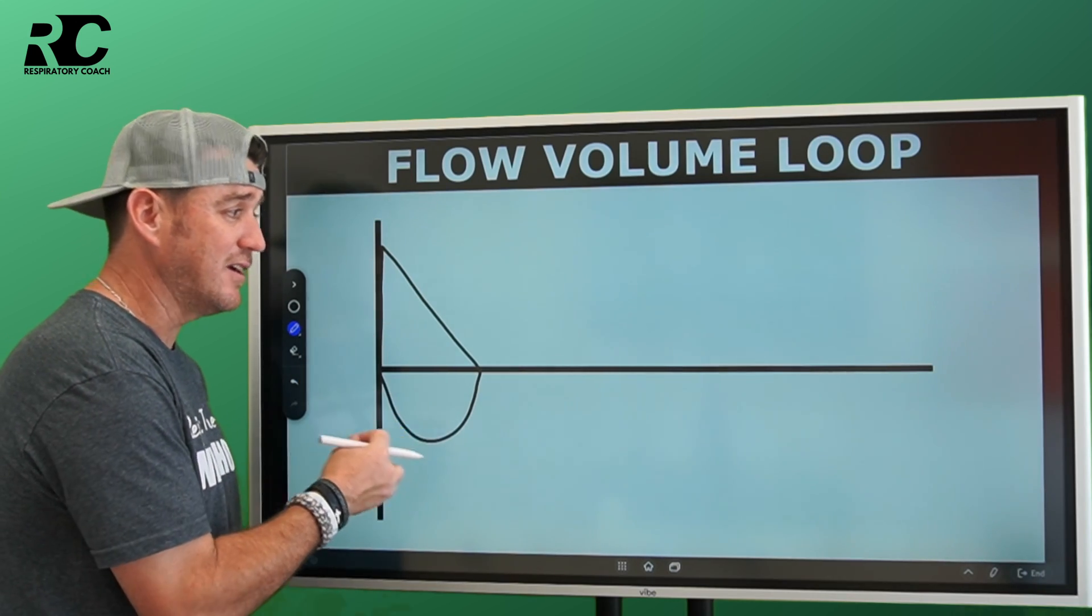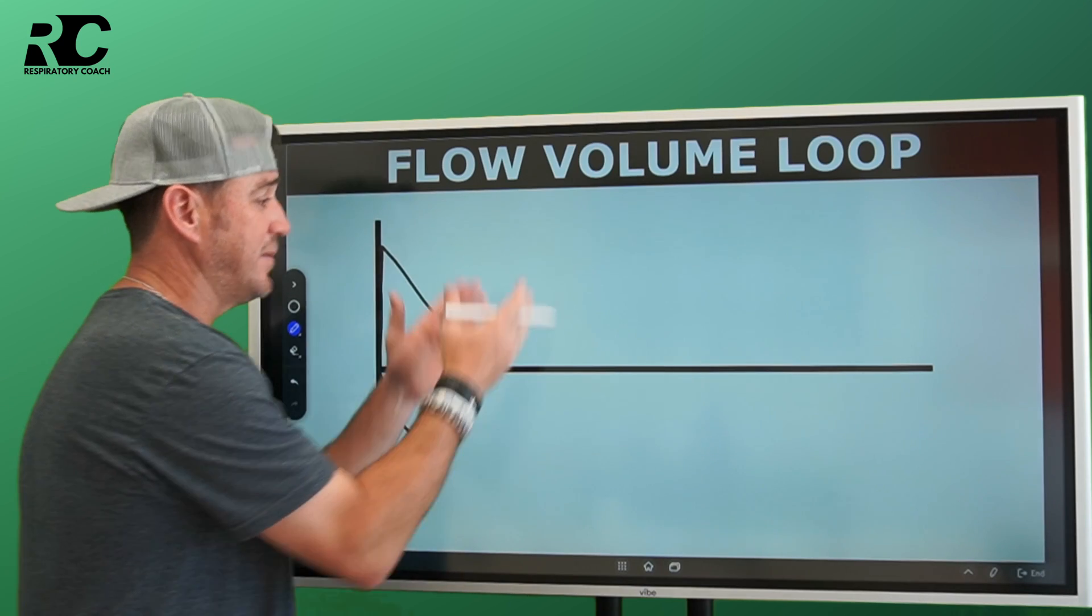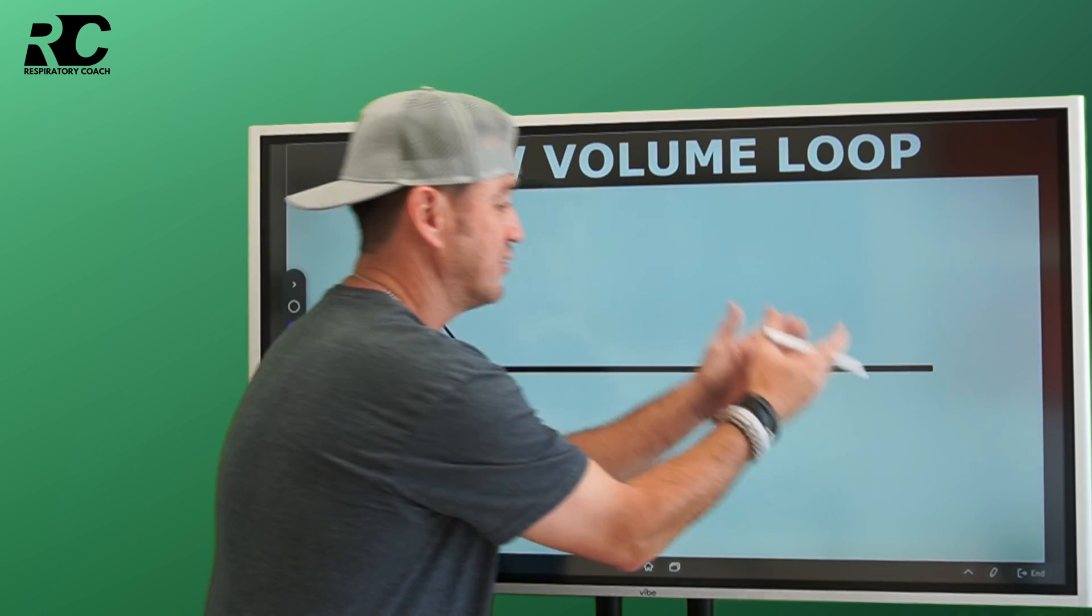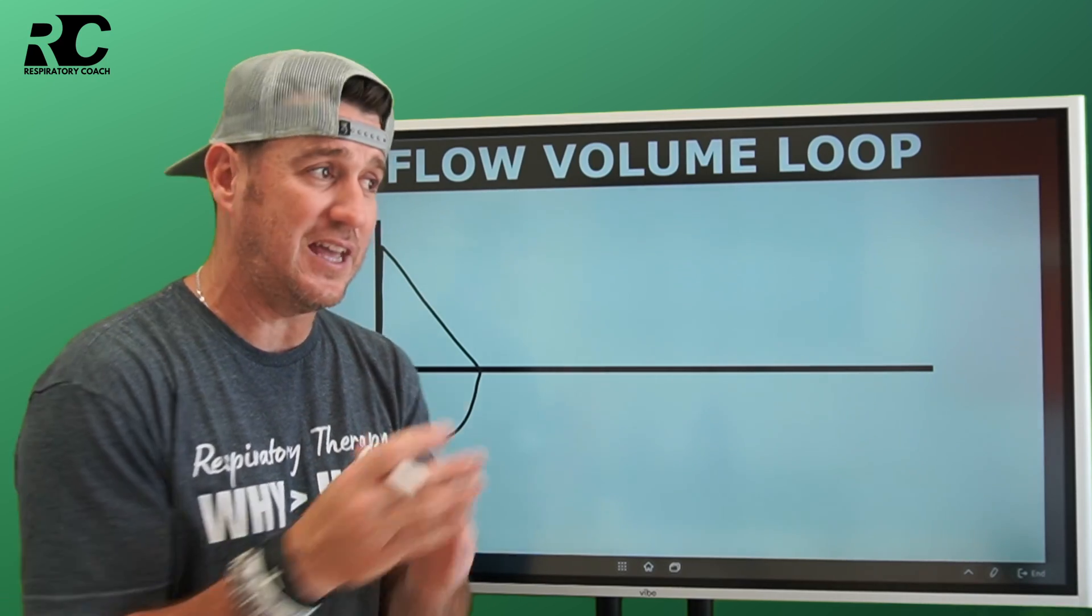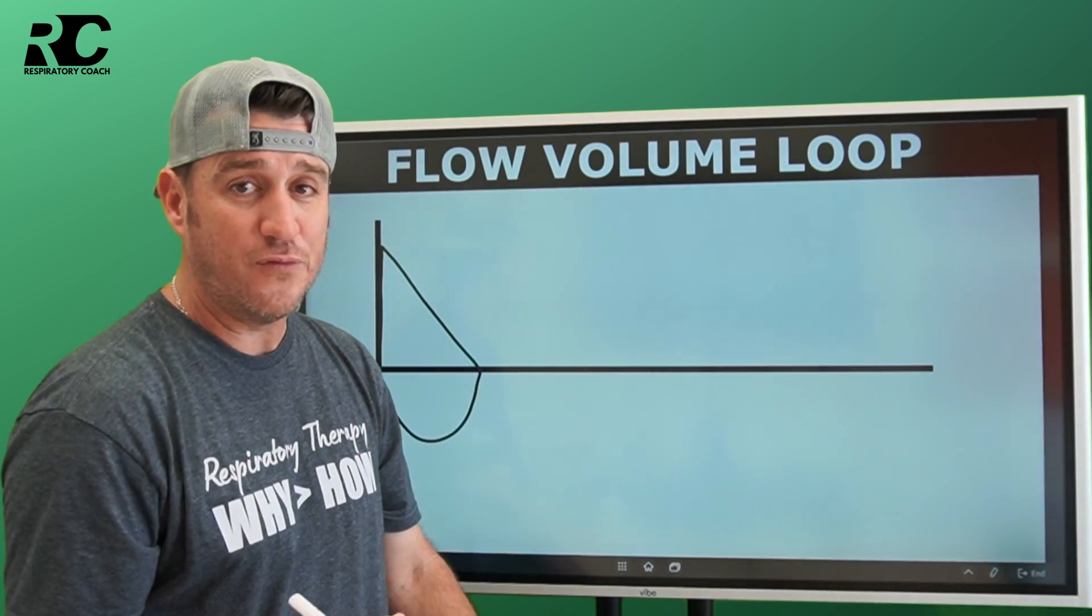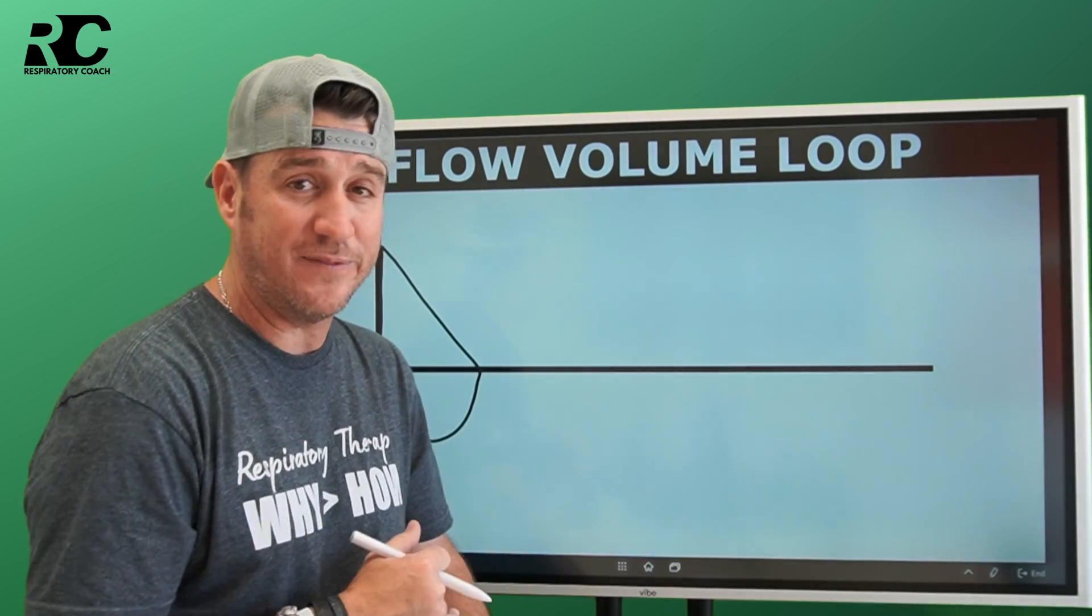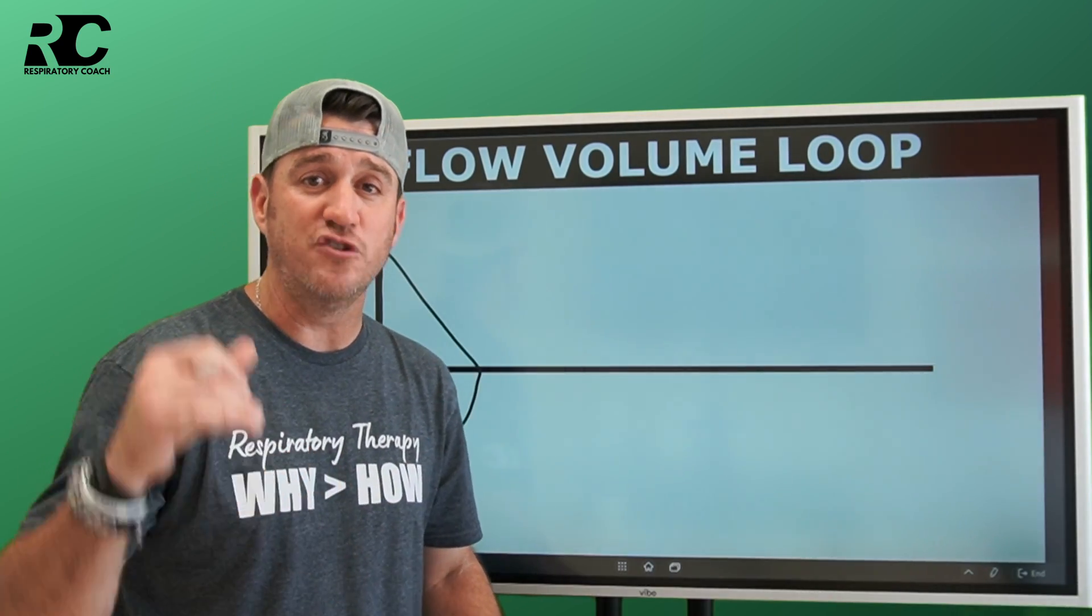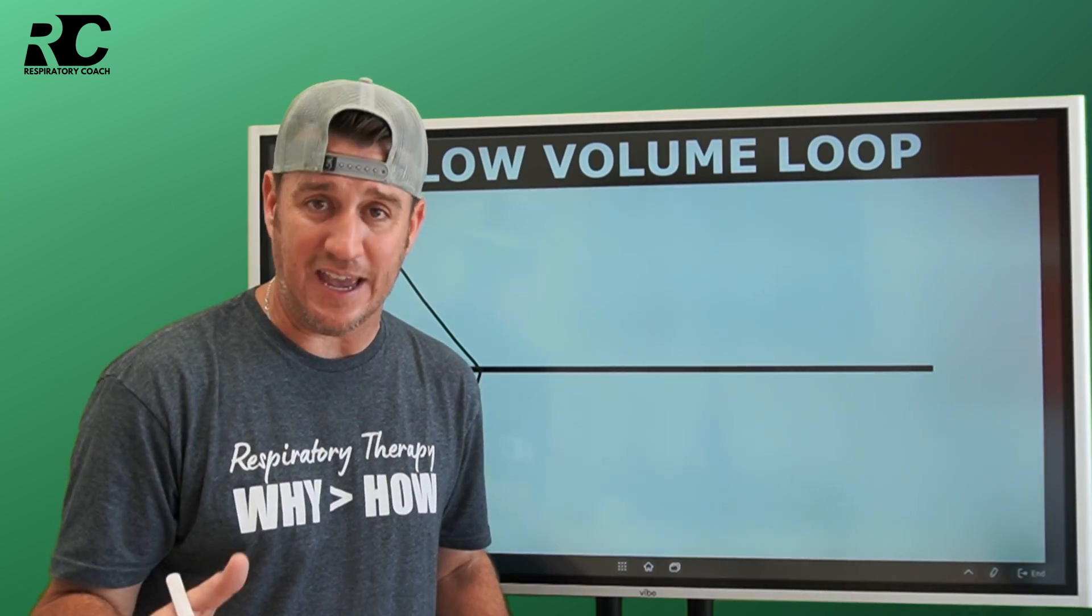When somebody with an obstructive lung disease presents for a pulmonary function test, they're going to do the exact same thing, but their test is not going to look like that. I'm going to draw three different ones for you. This is the first one. I'm going to draw the obstructive now, and I'll draw the restrictive in a second. What does it indicate?